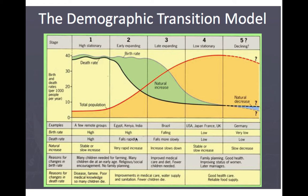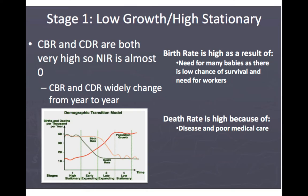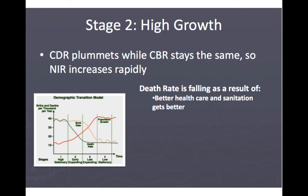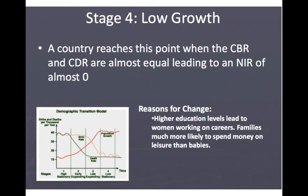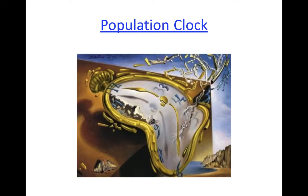Examples include Kenya and Italy, where the death rate falls rapidly while the birth rate stays high — late expanding. The United States is in a low stationary stage — our population is not really growing. Germany is an example of a natural decrease stage, where both birth and death rates are declining, and they actually encourage people from other countries to immigrate because their population is shrinking. Stage four is low growth, where birth and death rates are nearly equal.